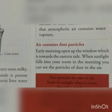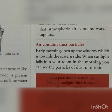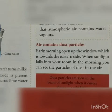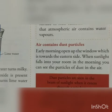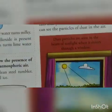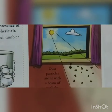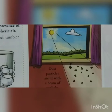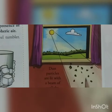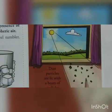Air also contains dust particles. In the morning, open a window facing the eastern side. When sunlight falls into your room, you can see tiny particles of dust floating in the air. These dust particles are very small and are visible when light passes through them.